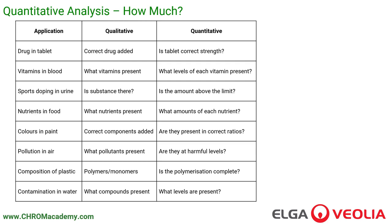For vitamins in blood, what levels of each vitamin are present? For sports doping in urine, are any of the substances present above the legal limit? For nutrients in food, what amounts of each nutrient are present — are the right amounts there for the type of food produced? For colours in paint, are the substances there in the correct ratios? For pollution in air, we've identified what pollutants are there; now quantitatively, is there anything at harmful levels we should be worried about? For composition of plastics, is the polymerisation process complete — what's the ratio of monomers to polymers, and how much of the accelerants are left after the reaction? For contamination in water, we've identified qualitatively what compounds are there; quantitatively, we want to know how much, and whether levels of each substance are above any limits we should be paying attention to.